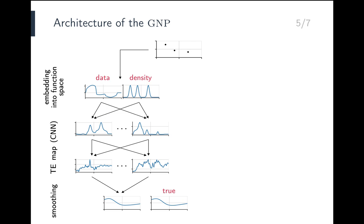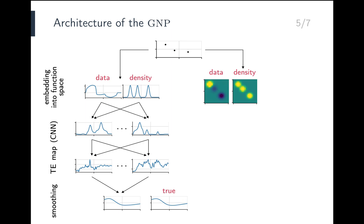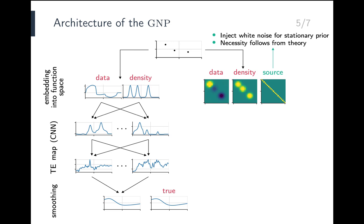The architecture for the kernel map, which is the novel part of the GNP, proceeds in an exactly analogous way. The first step is again an embedding into a function space. However, whereas the mean function is a function of one variable, the kernel function is a function of two variables. Consequently, the embeddings for the kernel map are also functions of two variables, depicted as heat maps on the slide. Again, the data channel communicates the values of the observed data, and the density channel where data is observed. For the kernel map, there is an additional third channel — the source channel — which is simply equal to the identity matrix.